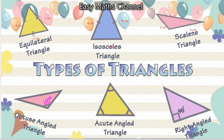Next is the right angle triangle. In a right angle triangle, one angle is exactly 90 degrees. The other two angles are acute — below 90 degrees. One angle is compulsory 90 degrees. These are your six types of triangles.